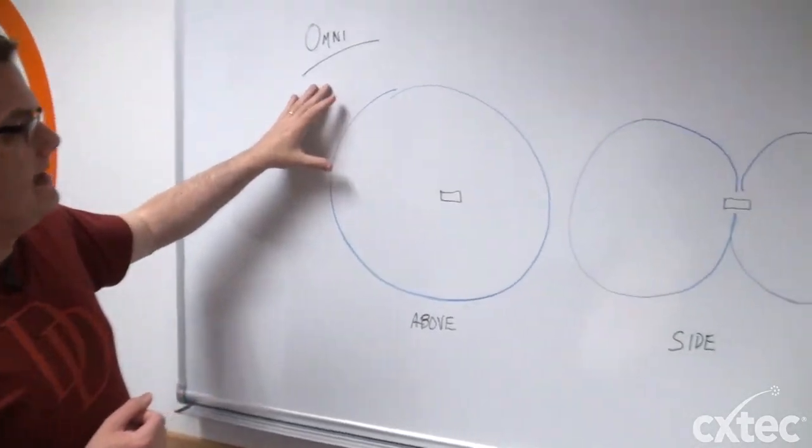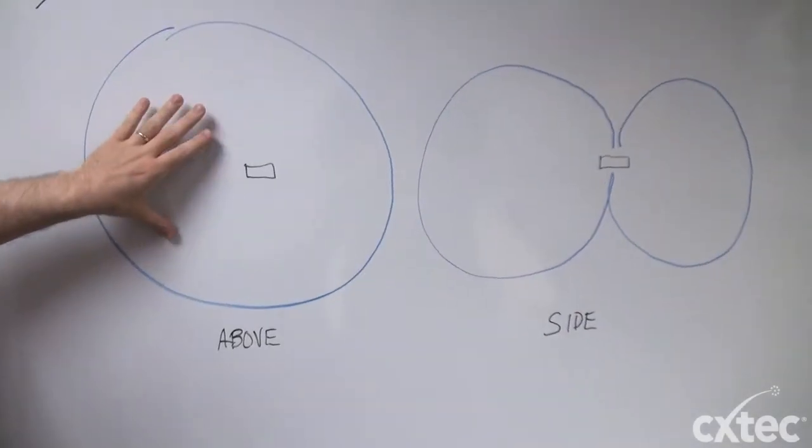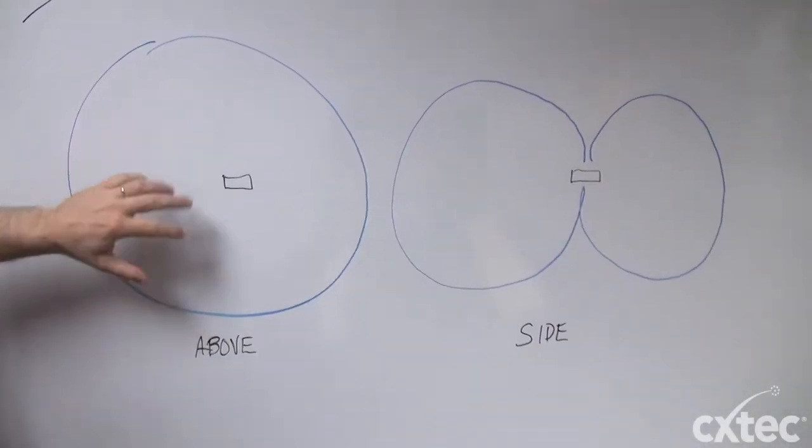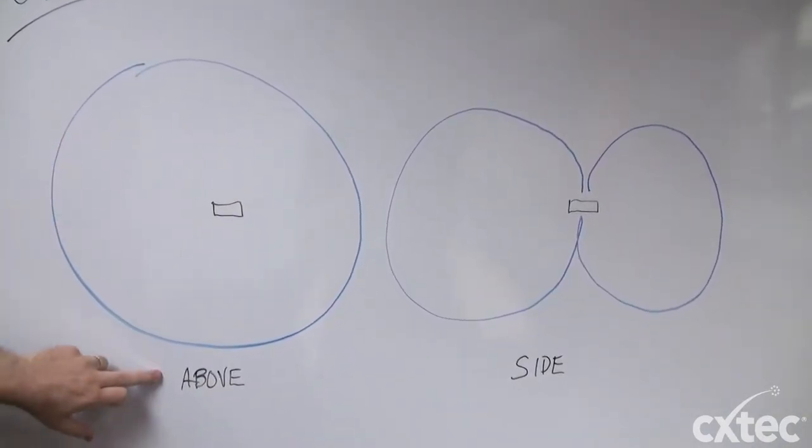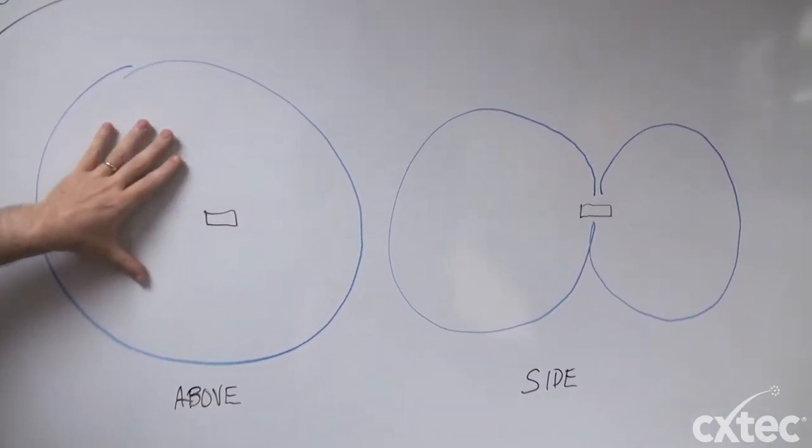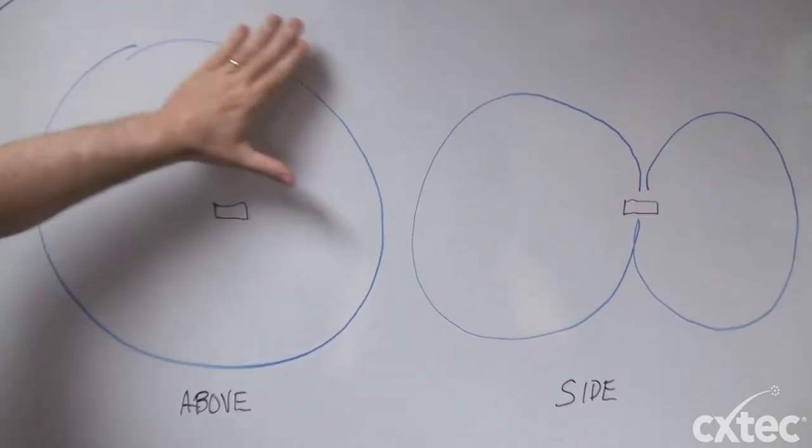So if we take a look at these radiating patterns and know this is not a poorly made donut, it is a poorly made drawing though. Here in the center, this little box is going to be the access point. And you see that from above, if you were to look at that radiating pattern, it looks like a giant circle.